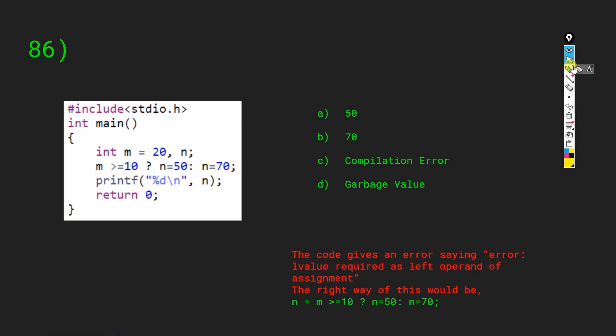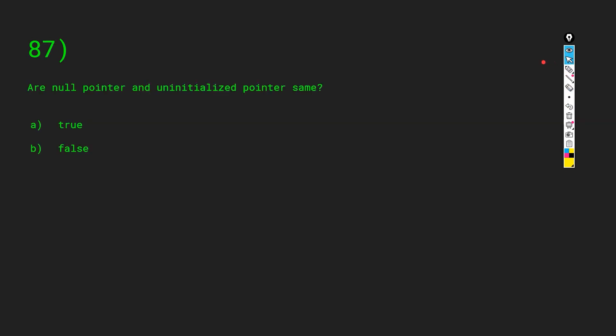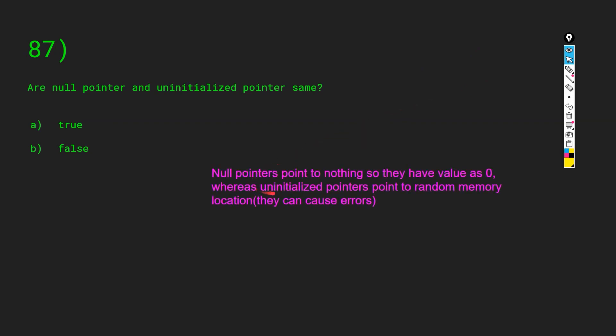A null pointer and an uninitialized pointer are the same — the answer is false. A null pointer exactly points to zero, meaning it points to nothing and has a value of zero. An uninitialized pointer points to random memory locations and can cause errors. When programming in C, deal precisely with pointers — allocate and de-allocate them properly.